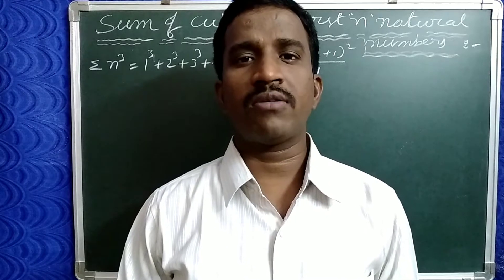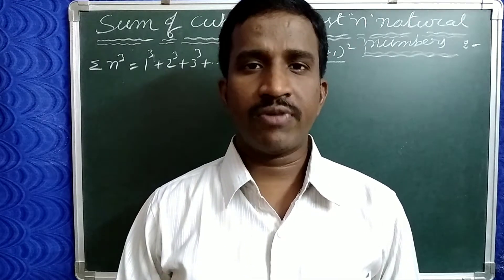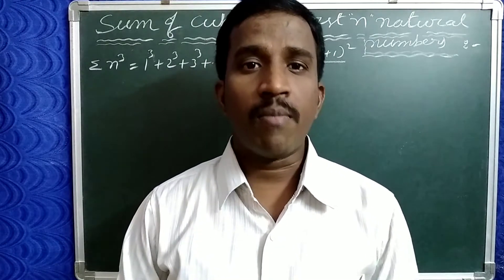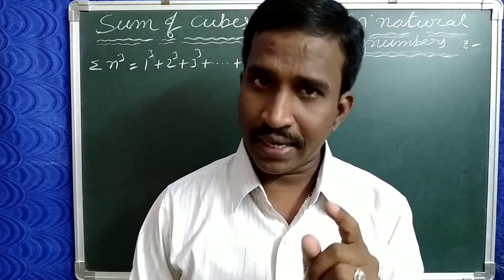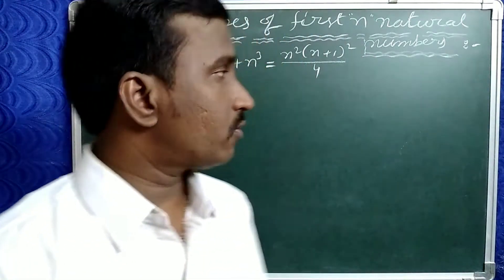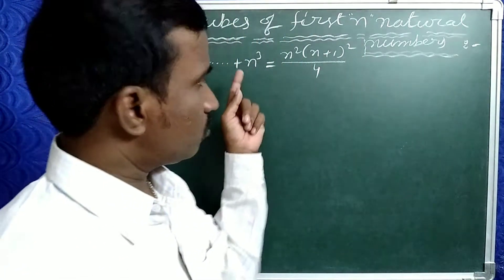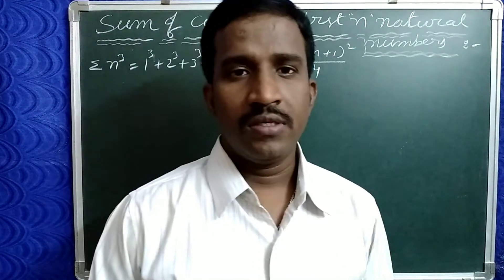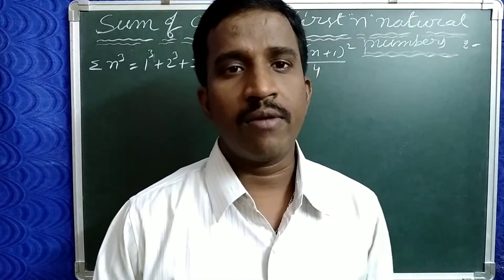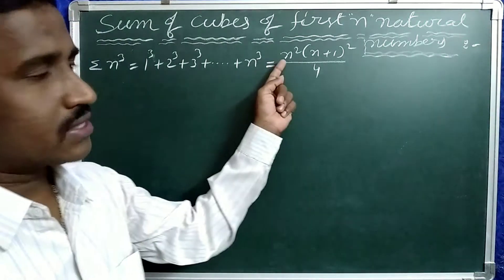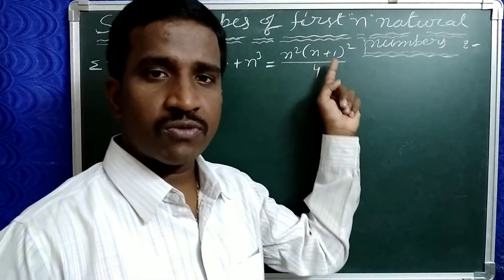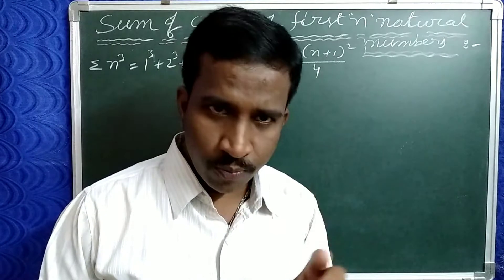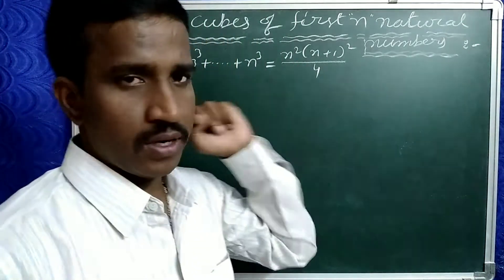Hi guys! Welcome back to our channel. In this video, we are going to discuss about the sum of cubes of first n natural numbers. We have to prove the formula for sigma n cube, which means n squared into n plus 1 whole squared by 4, and we have to prove how to get this formula.